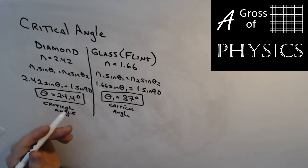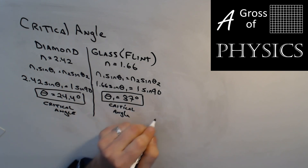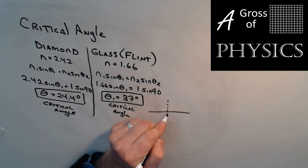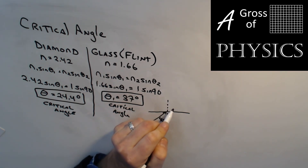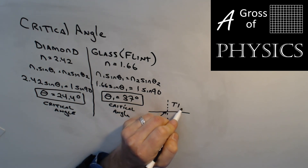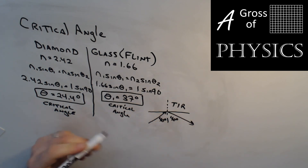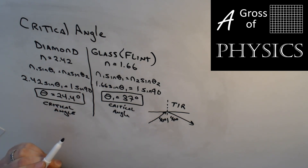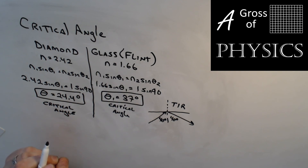The critical angle is a threshold — the angle at which light will either be trapped or not. If the angle is bigger than the critical angle, say 40 degrees for a material, the light is trapped and you get total internal reflection — it bounces back at 40 degrees, obeying the law of reflection. This is why fiber optics works, trapping light inside the cable.